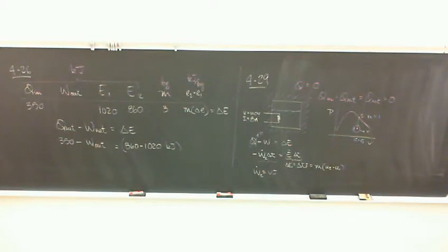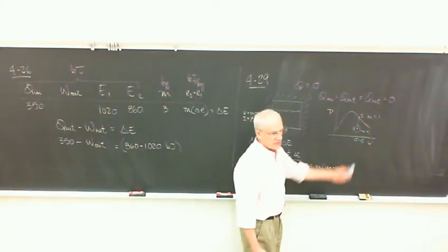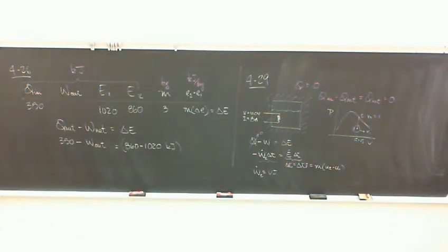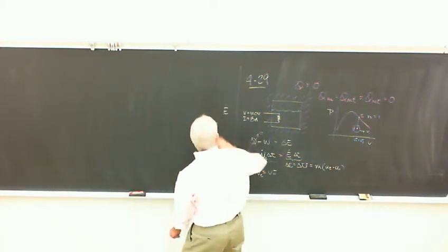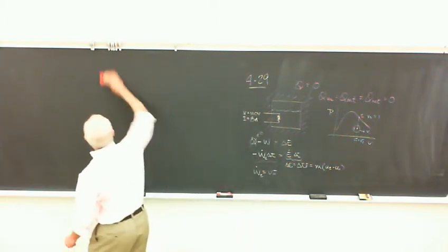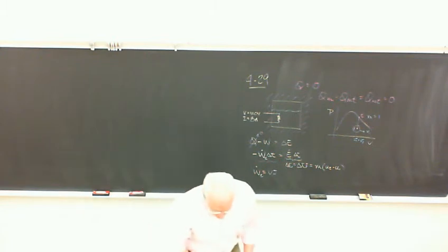You know that you're at that same specific volume and you're on the dome. And that's enough to fix the state point. When we say for the state postulate we need two intensive independent properties, quality is one of those. And saying that we're on the dome is the same thing as saying the quality is one. So the bulk of the effort is just actually establishing those two points.